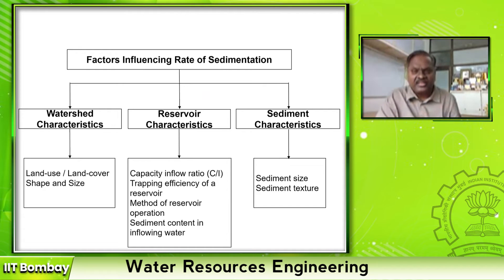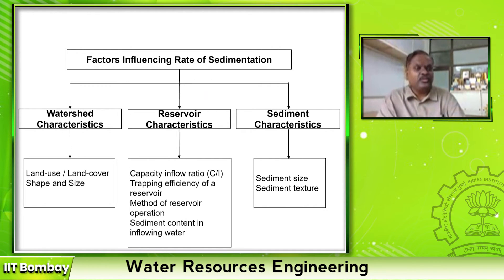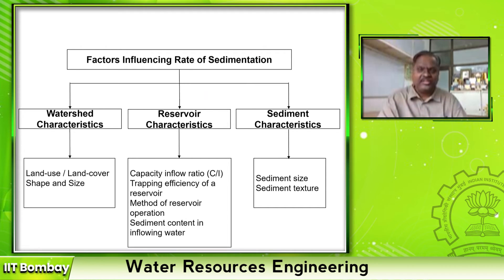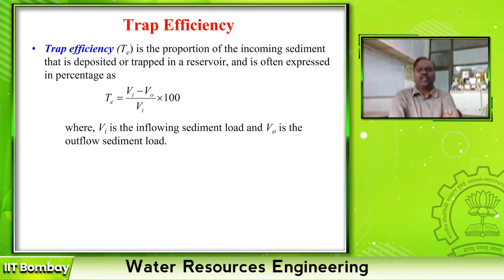The last characteristic which governs the rate of sedimentation is sediment characteristics — such as sediment size, texture, and shape. If the sediment size is very large, they get deposited at the mouth of the reservoir itself. If the sediments are always in coagulant form, whenever the gate is opened they go away. These are the characteristics governing the rate of sedimentation. Now, trap efficiency is one of the most important governing parameters in estimating the volume of sediment deposited.